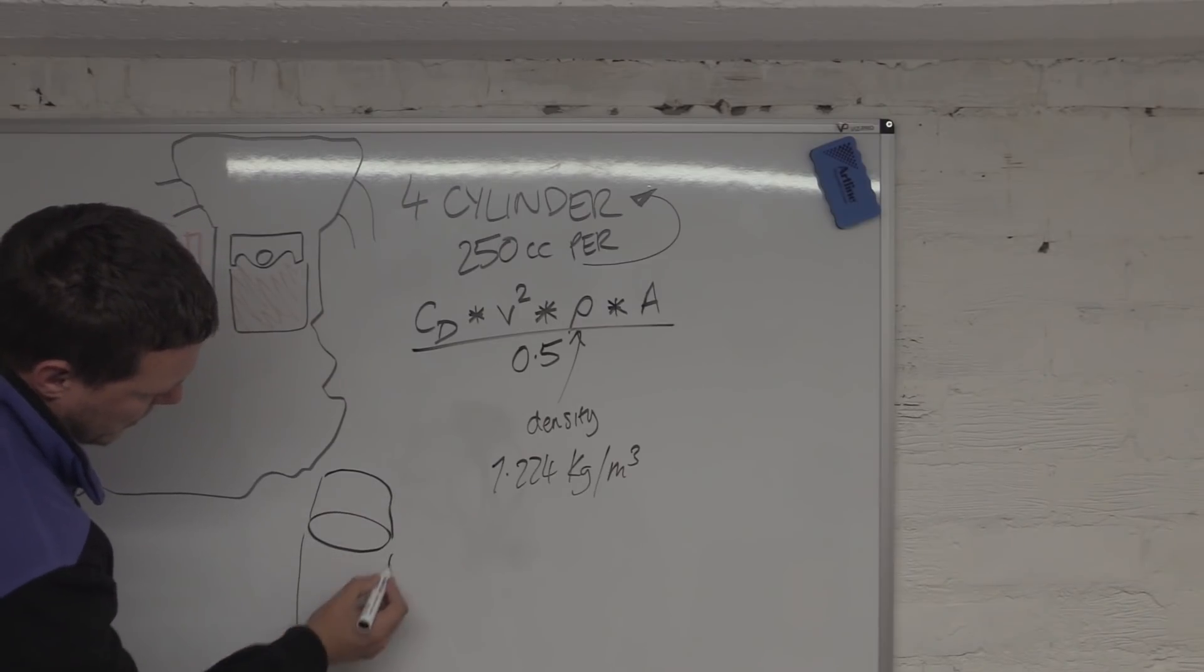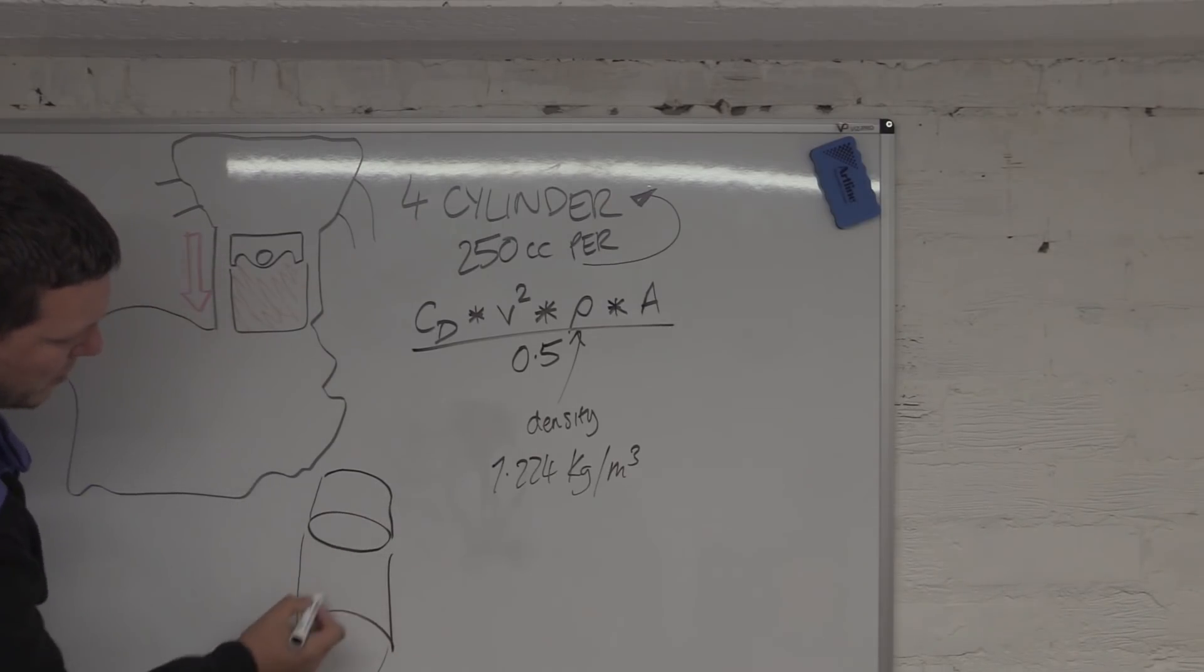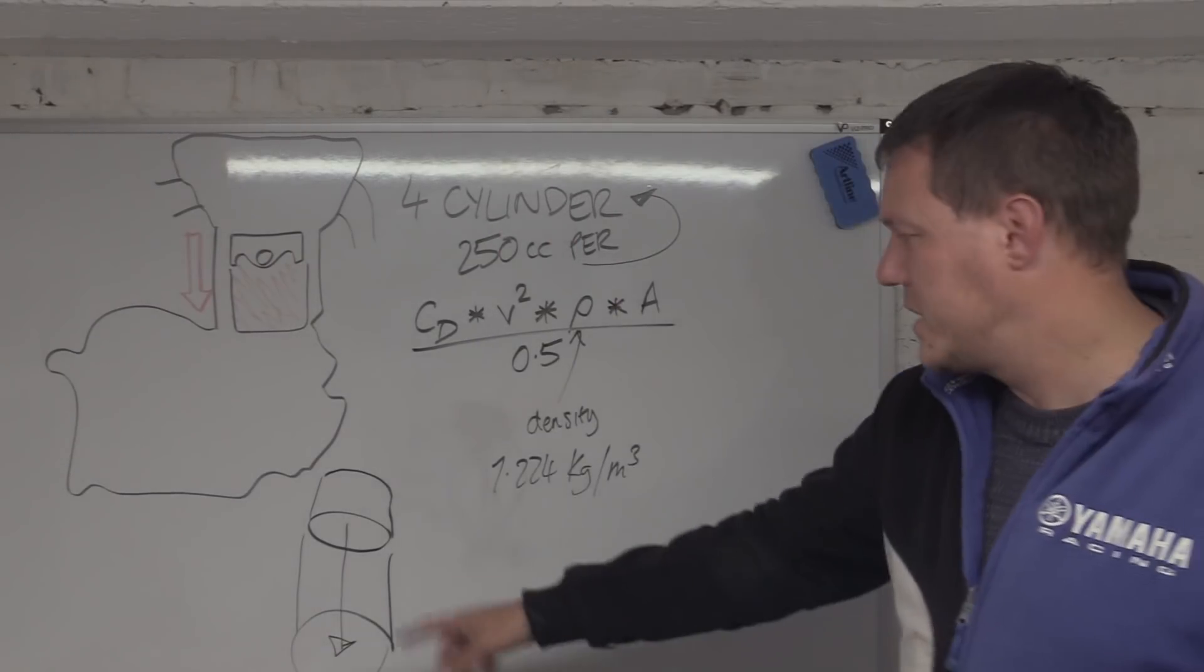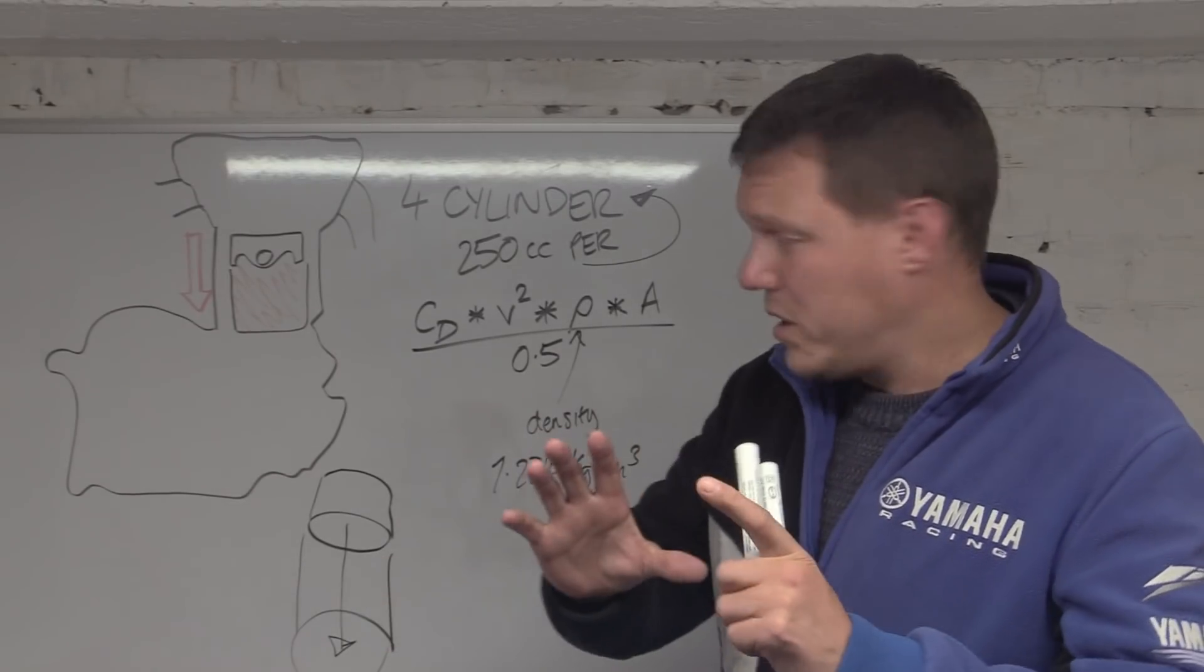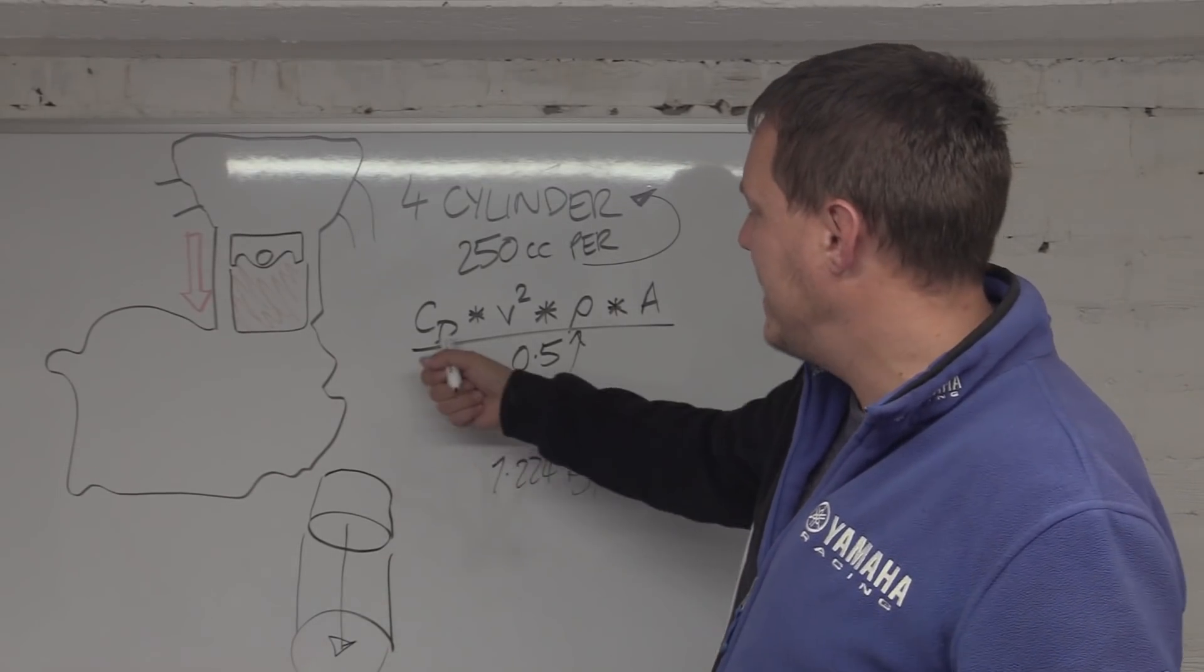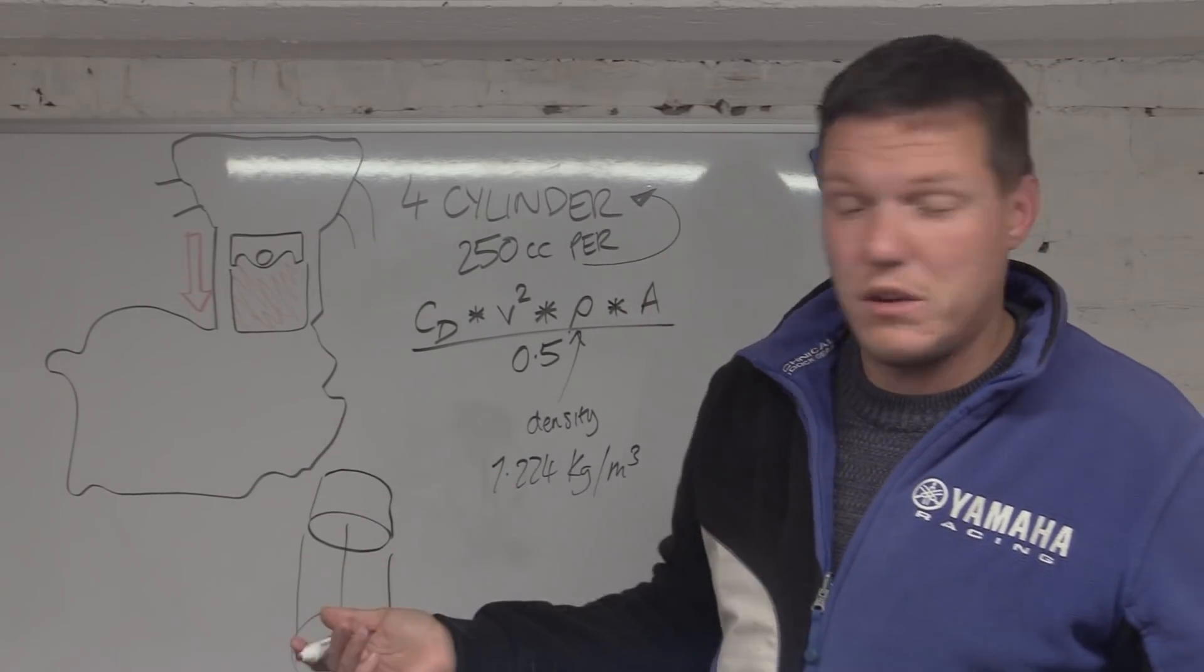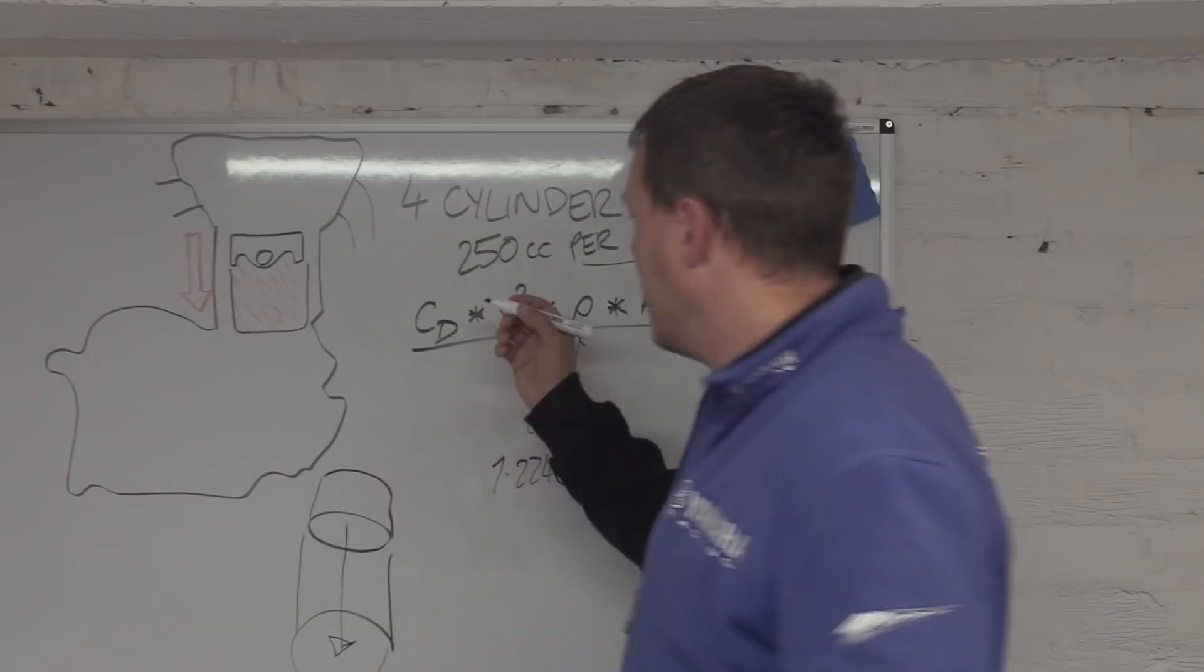For our CD, this is our profile basically. We don't want to mess around with the profile of a piston, we're just going to imagine that this is our cylinder, that's the bottom of the piston traveling this way down, pushing the air out of the way.